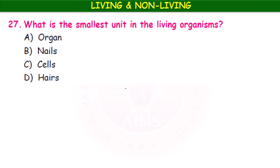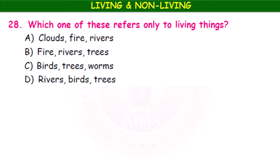What is the smallest unit in living organisms — organ, nails, cells, or hairs? Cells are the smallest unit. Which one of these refers only to living things? Option C — birds, trees, and worms — are all living. The remaining options contain non-living things.